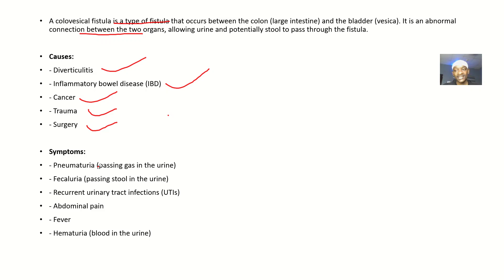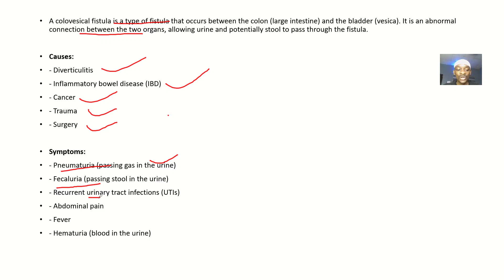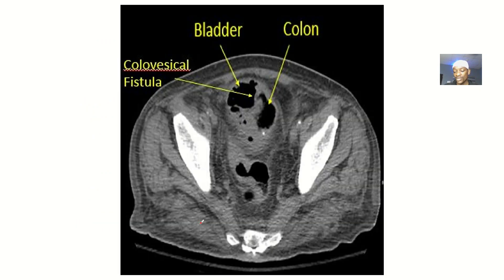The possible symptoms include: pneumaturia — passing gas in urine, because gas is traveling from the intestines into the bladder; fecaluria — passing stool in urine, because stool moves from the sigmoid colon into the bladder; recurrent renal tract infections, because microorganisms port from the intestines into the bladder. Other symptoms include abdominal pain, fever, and hematuria — blood in urine.